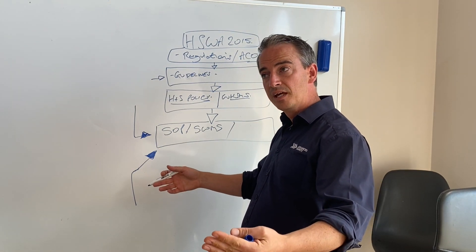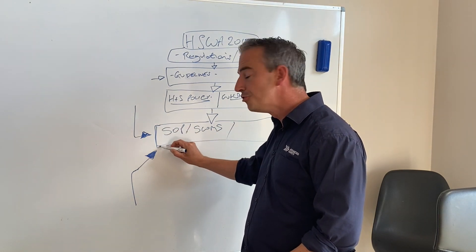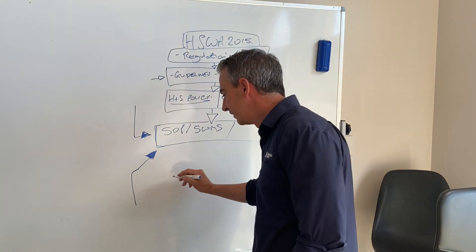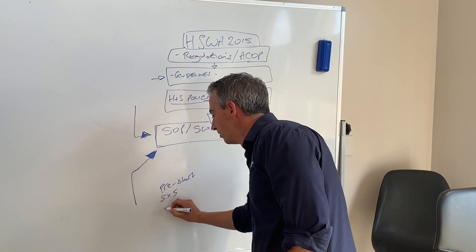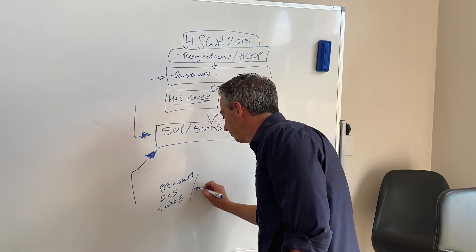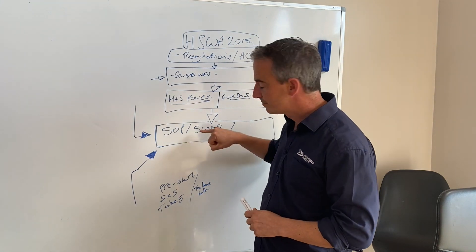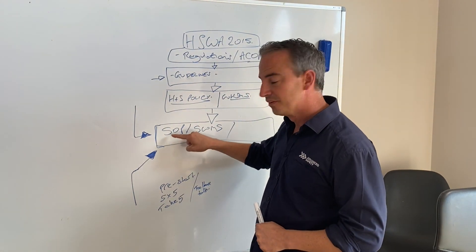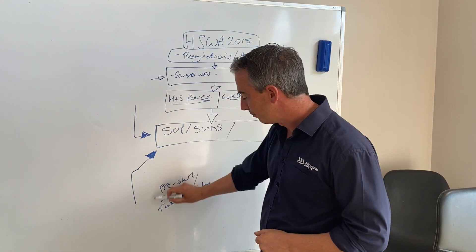They look at their standard operating procedures or safe work methodology statements and consider the hazards and risks they are actually looking at on the day. They may have a checklist, a five-by-five, a take five, or a pre-start assessment that asks them to identify the types of risks present at that particular time. They can then compare that with the company SWMS — which is really set in stone. They really shouldn't be stepping outside the bounds of these documents; it tells them step by step how to do that task safely. The more input workers have on this documentation, the more likely they are to have buy-in and refer to these documents.